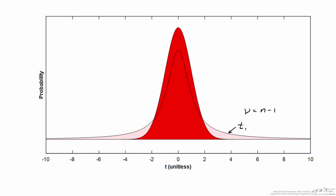Here's a t-distribution with one degree of freedom, and here's a t-distribution with an infinite number of degrees of freedom — like taking an infinite number of measurements. As it turns out, the larger the number of degrees of freedom, the closer these distributions get to a normal distribution.